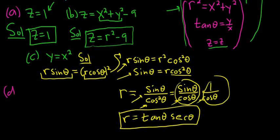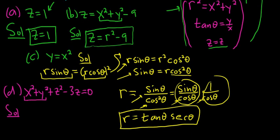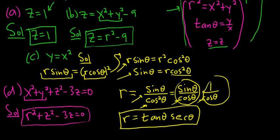Let's do one more — part d. We have x squared plus y squared plus z squared minus 3z equals 0. We know x squared plus y squared is r squared, so this becomes r squared plus z squared minus 3z equals 0. Not much else you can do since z is z. I hope this video has been helpful.